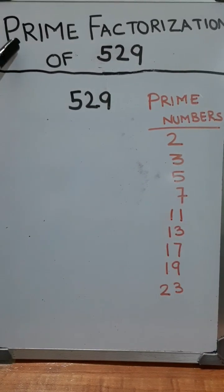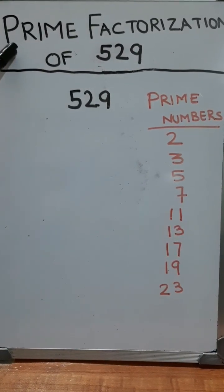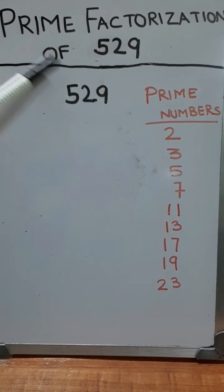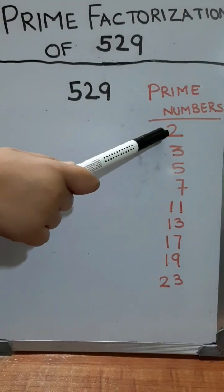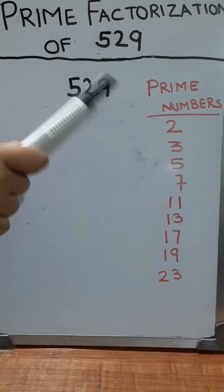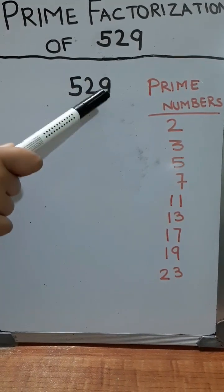We will find the prime factorization of 529. We start with 2, the smallest prime number. 2 does not divide 529.